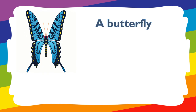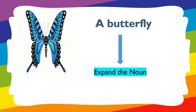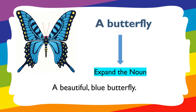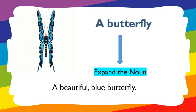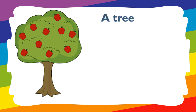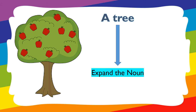Now we have more examples of expanded noun phrases. Here we have 'a butterfly.' To expand the noun phrase, we get 'a beautiful, blue butterfly.' Here we have more than one adjective — 'beautiful' and 'blue.' Next, here we have 'a tree.' To expand the noun phrase, we get 'a huge, green, apple tree.' Here we have more than two adjectives used to describe the tree.